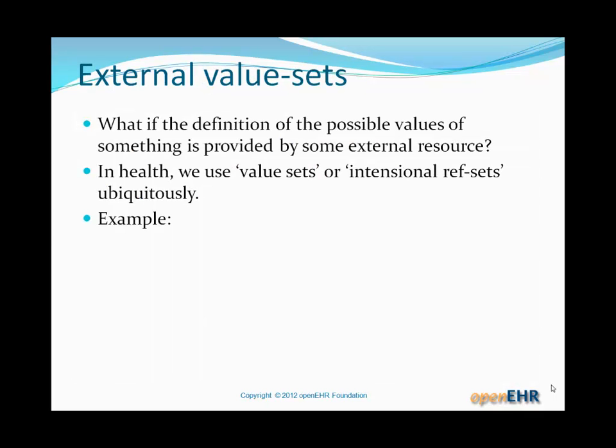The last thing we'll look at is external value sets. What if the definition of the possible values of something is provided by some external resource? So far what we've seen is that we are going to define inside the archetype what the possible values of something is. So if it's a numeric field then by a range or a list or regular expression for strings. Now in health we often want to specify value sets or intentional ref sets externally to models, to let's say data information models such as archetypes, and they would be typically based on the terminology such as SNOMED CT and other terminologies.